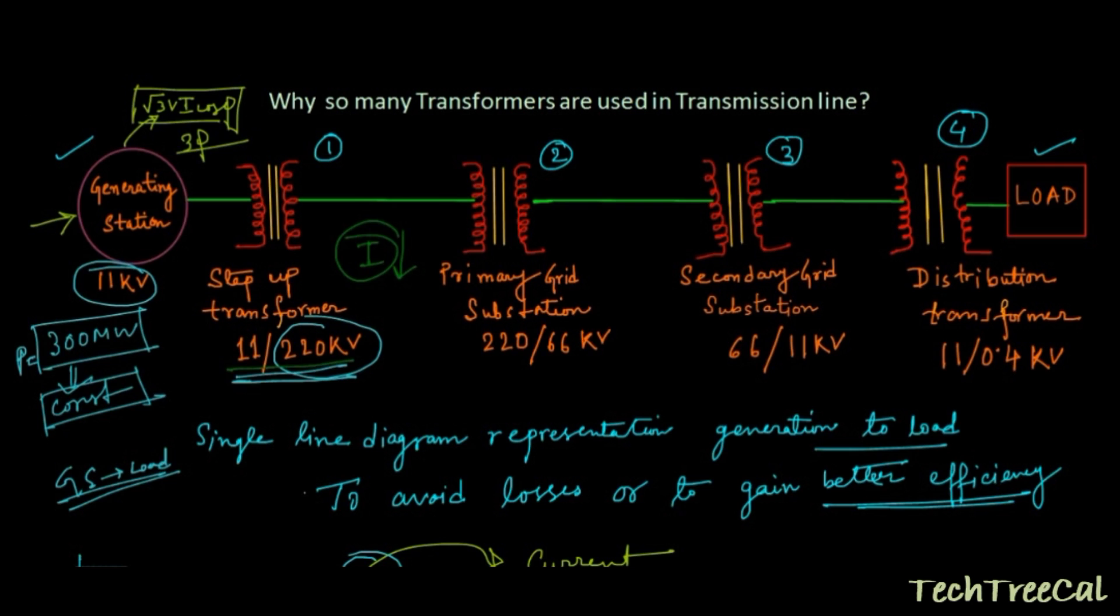So here the voltage is stepped up to 220 kV. Then after transmitting a long distance—it is generally a long distance transmission—it is stepping down to 66 kV. Again at secondary grid substation it is decreased to 11 kV, and then from the distribution transformer it is stepping down to 400 volt and supplied to the load.